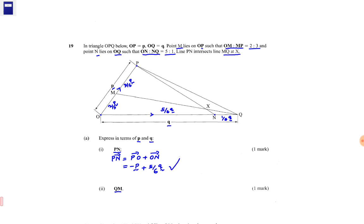Now obtaining the value of vector QM, expressing QM in terms of P and Q. To move from Q to M, we need to follow the route Q to M equals QO plus OM. The value of vector QO is the negative of OQ, so this is negative Q plus OM. OM is 2 over 5 P. Getting the value of vector QM is another one mark.